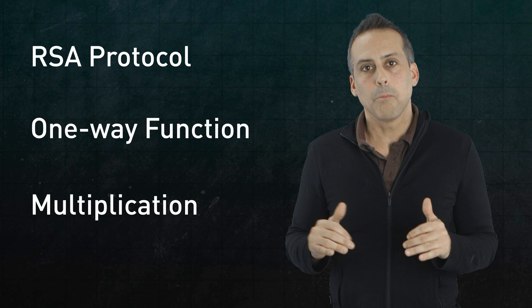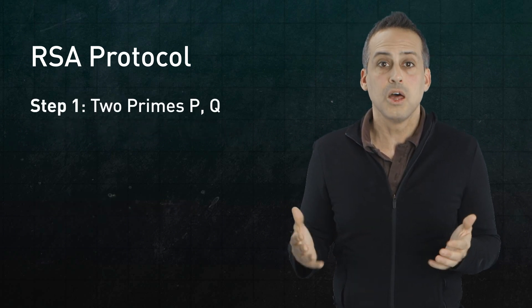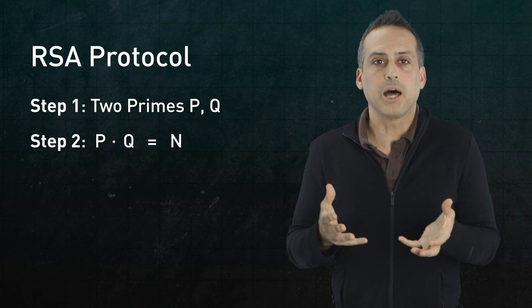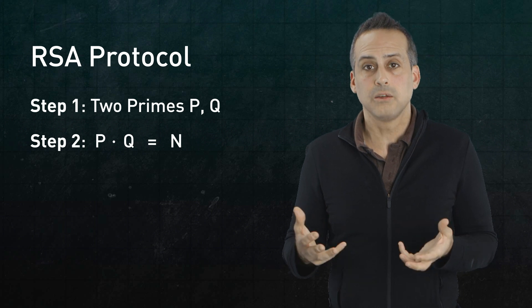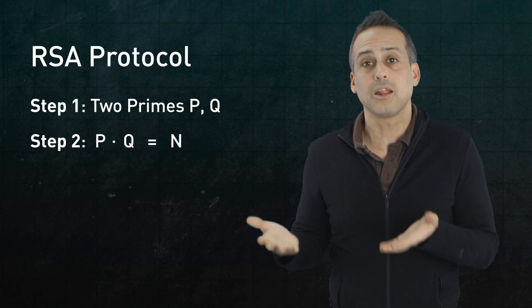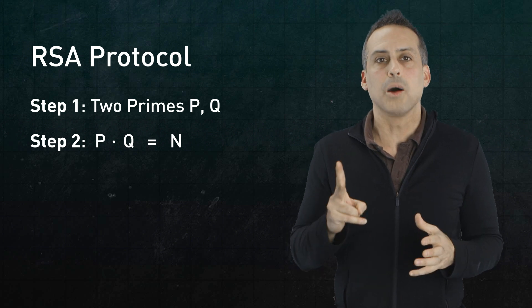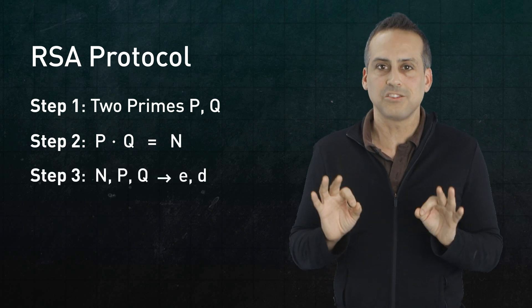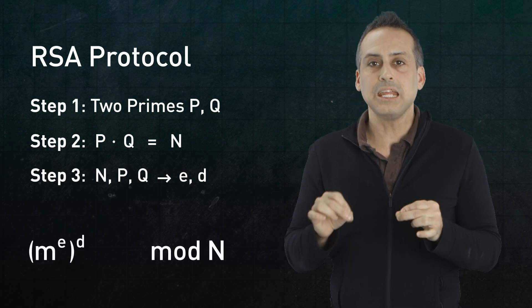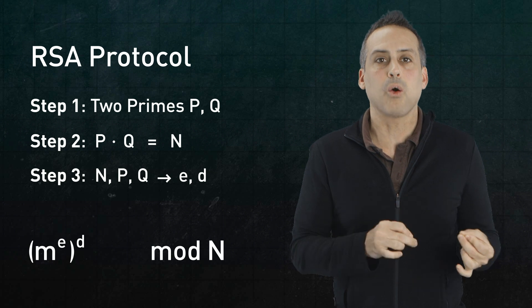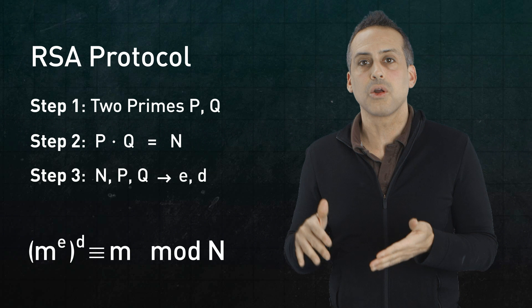RSA begins by choosing two prime numbers, at least one of which has hundreds of decimal digits. Those primes then get multiplied to form a large composite number, n. If you know the prime factors of n, and you do, since that's how you built n in the first place, then it turns out that you can also produce two other numbers, e and d with the following fascinating property. In mod n arithmetic, raising any number m to the e power and then to the d power, or vice versa, will give you back the original number, m.